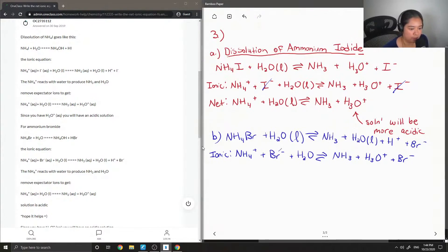And now I'm going to cross out my spectator ions, which is just the bromine in this case, and then I'm going to write out the net ionic equation. Okay, so again we have H3O plus, so this solution will be acidic.